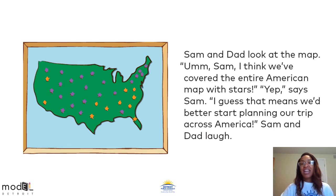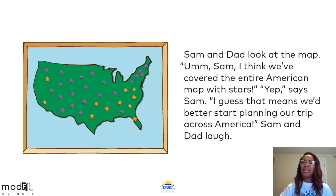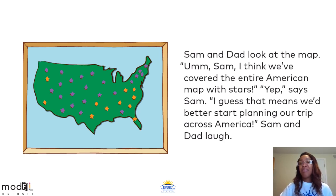Sam and dad look at the map. Sam, I think we've covered the entire American map with stars. Yep, says Sam. I guess that means we better start planning our trip across America. Sam and dad laugh.